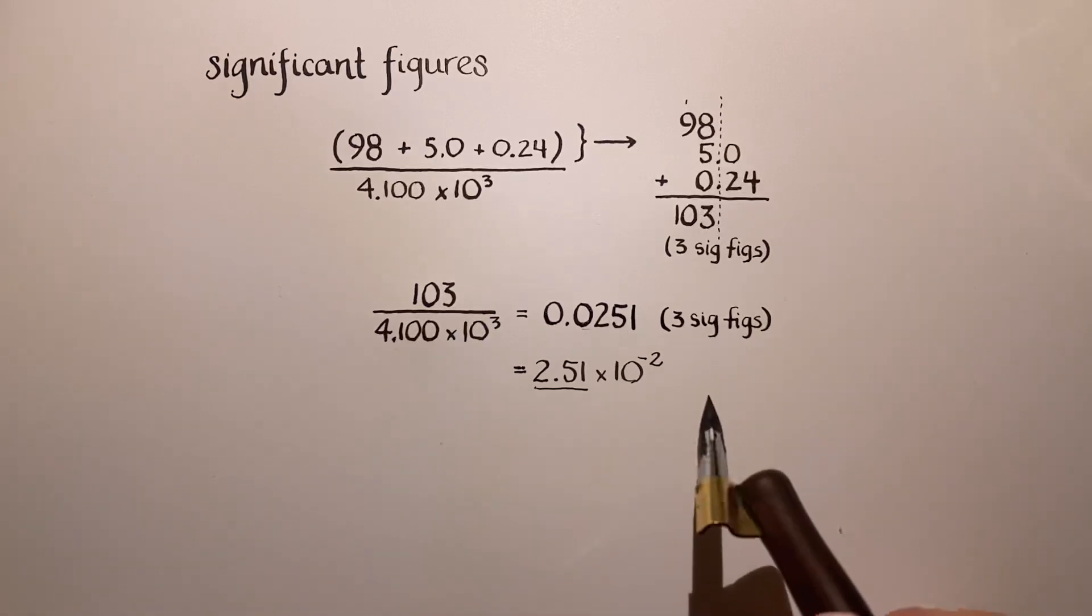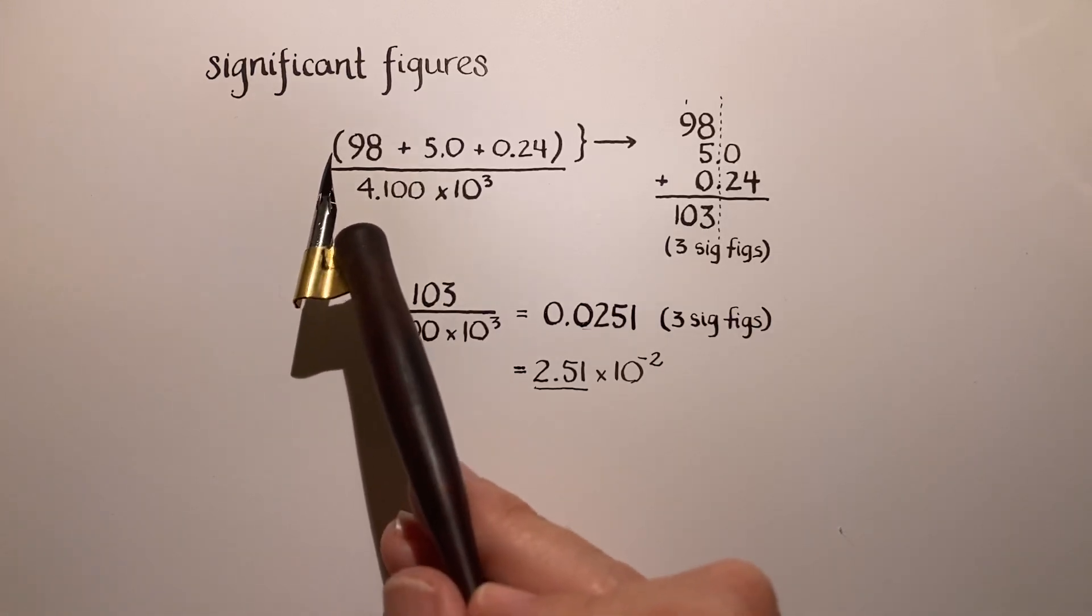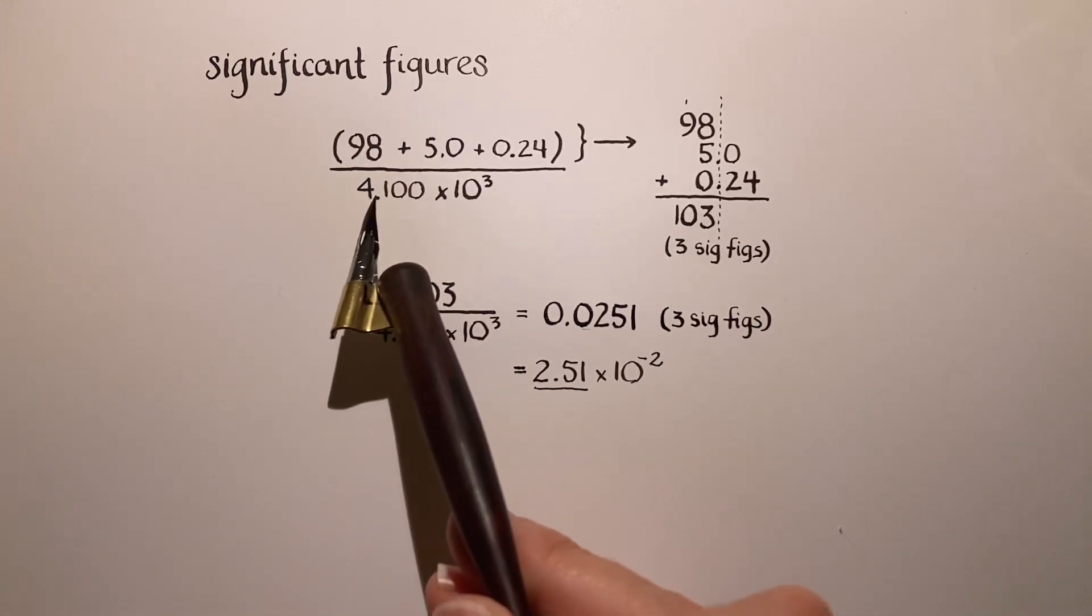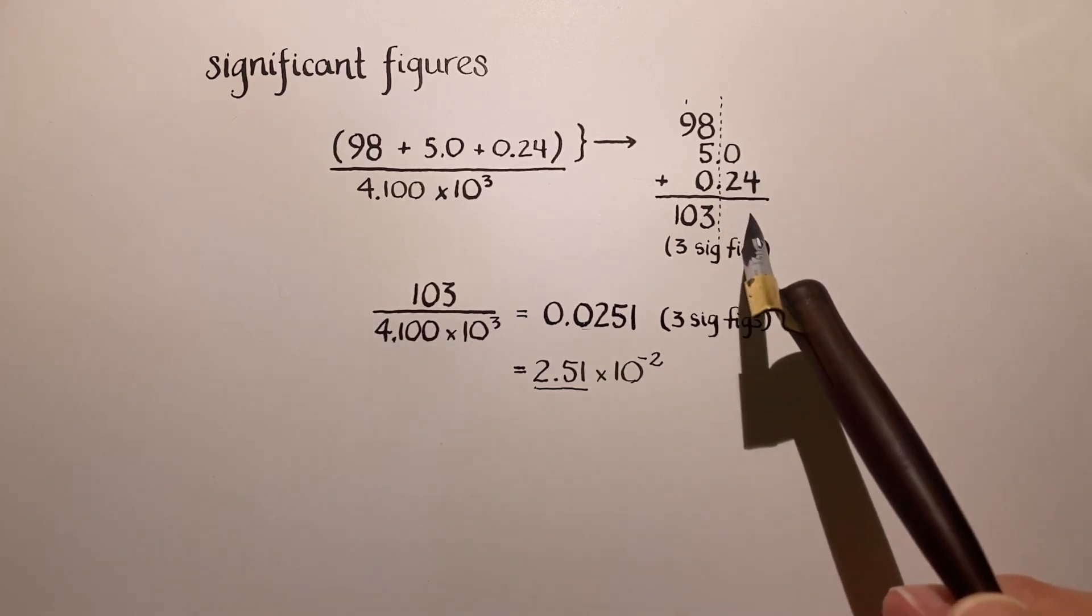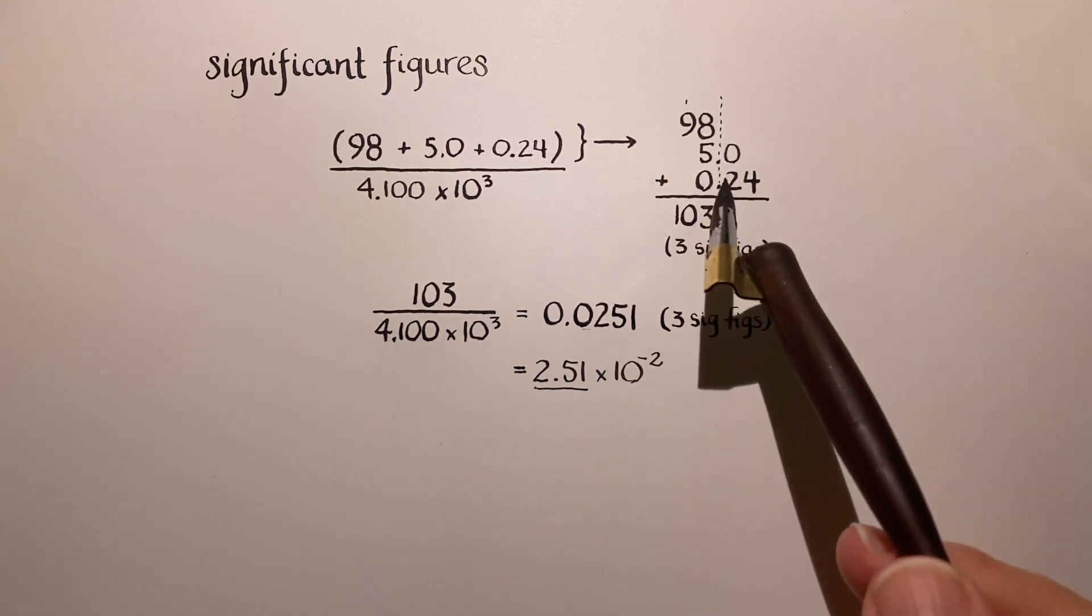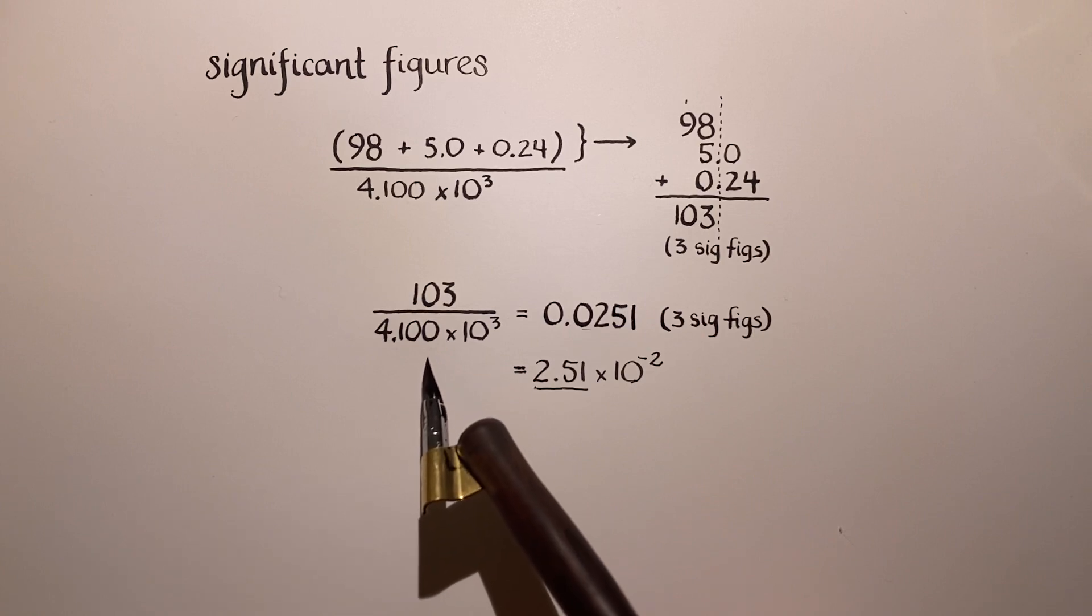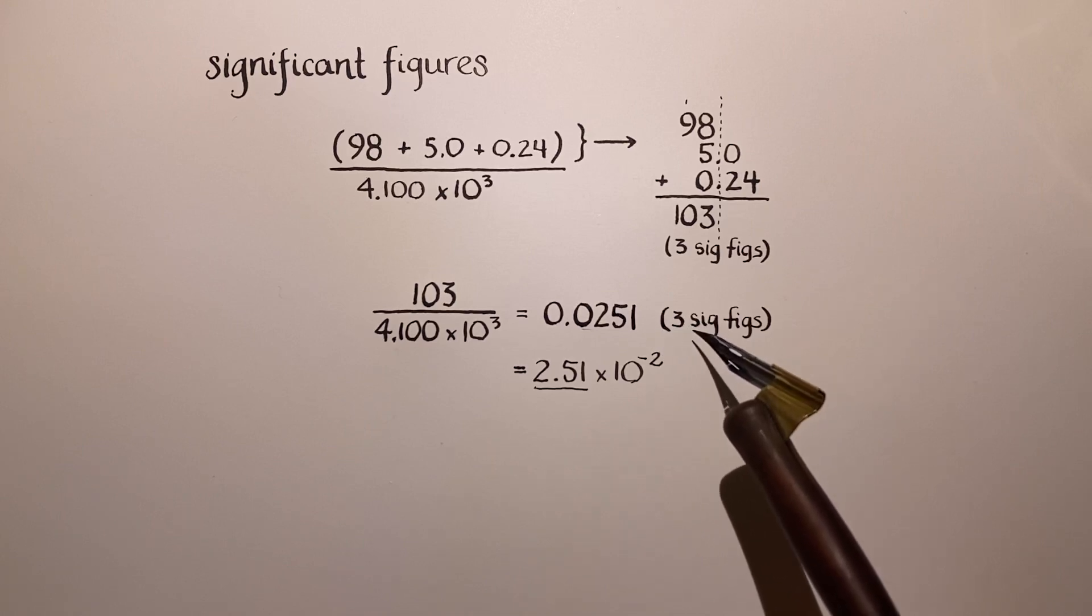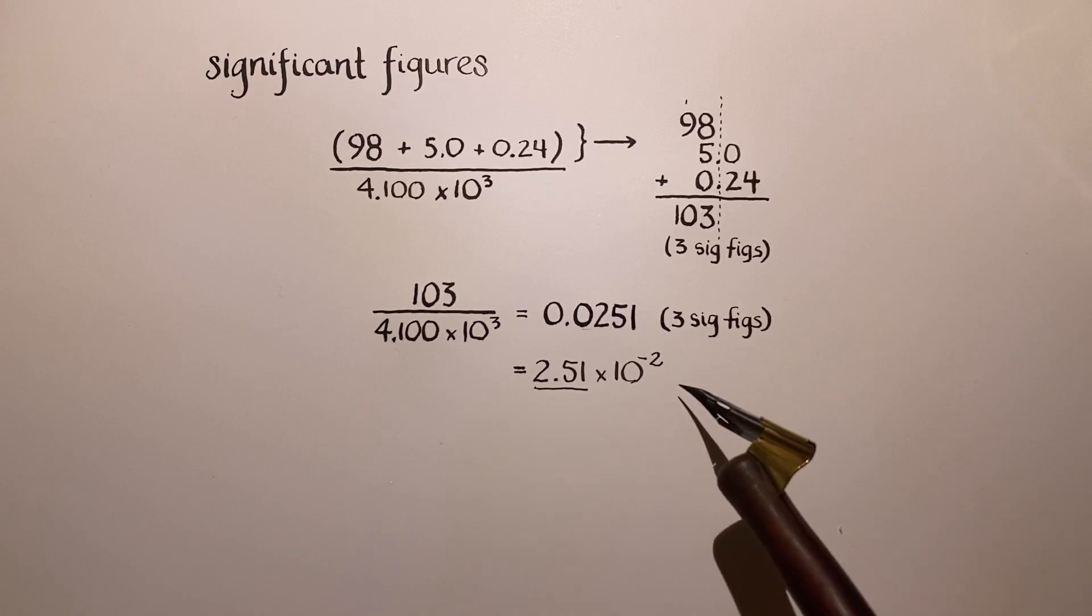Alright, well I hope this was helpful in doing some calculations with significant figures, identifying how many significant figures each value has, doing calculations that use addition—this also works for subtraction in the same way, you also want to line up decimal points—and then also doing a calculation that involves multiplication, or in this case division, getting a final answer with the correct number of significant figures, and also expressing your final answer, if you wish, in scientific notation.